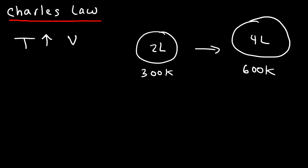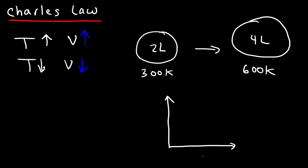That's the basic idea behind Charles's Law — it shows the direct relationship between temperature and volume. If you increase the temperature the volume will increase, and if you decrease the temperature the volume will decrease. If you were to make a graph between volume and temperature it would look like a straight line — it's a linear relationship, so as the volume goes up the Kelvin temperature goes up with it at the same rate.